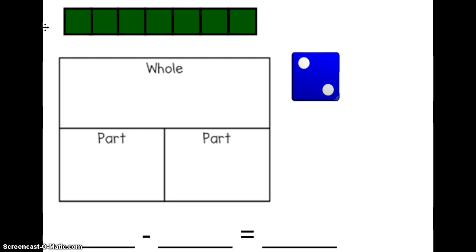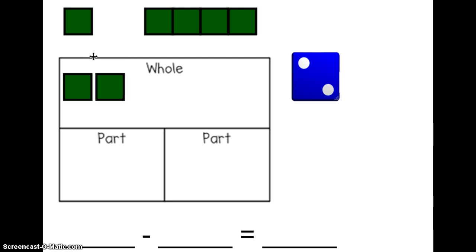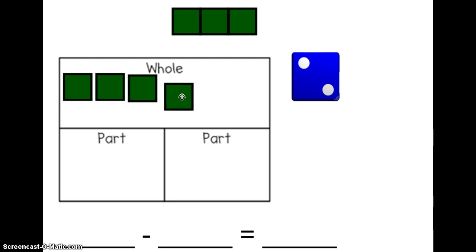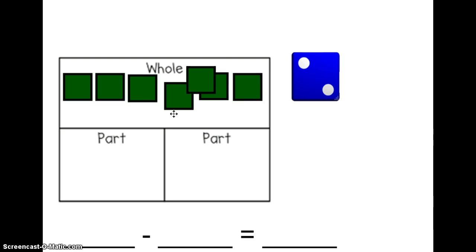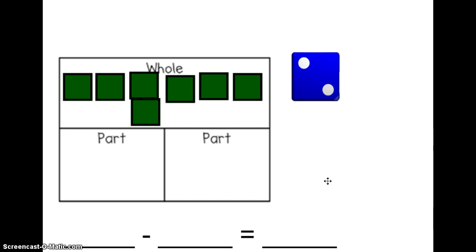This time I have one, two, three, four, five, six, seven cubes. I'm going to take those seven cubes and put them into my whole. That's what I'm starting with — that is my biggest number. My whole always comes first when I subtract.